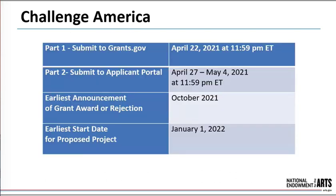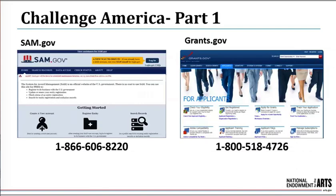The application deadline for Challenge America is April 22, 2021, at 11:59 PM Eastern Time. Your application will include two parts. The guidelines include step-by-step instructions for completing both Part 1 and Part 2. We have pre-recorded presentations that walk you through every step of each part — we really encourage you to take the time to watch those. They're reasonably short and you can fast-forward as needed.